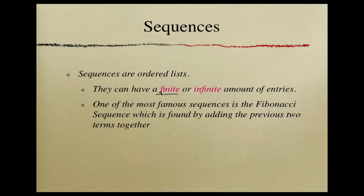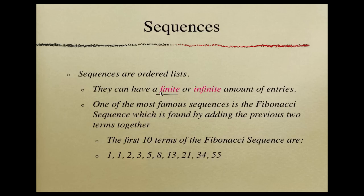One of the most famous sequences is the Fibonacci Sequence, which you may or may not be familiar with. It's also called the Golden Ratio, or it deals with the Golden Ratio. The way that you find the Fibonacci Sequence is you take the terms in the sequence and you add the previous two terms together. So the first 10 terms of the Fibonacci Sequence are below. So you would start with 0. Your next one would be 1. So 1 plus 0 is 1. So that's how we get this term.